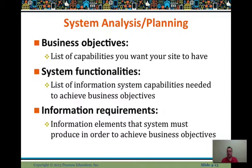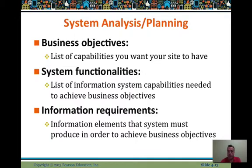Systems analysis and planning covers business objectives, system functions, and information requirements. In addition to listing the capabilities you need to achieve those objectives, you have to know the data elements and specific data that will be used throughout the system. When you break that down to a more granular level, your information requirements will have field-level specifications, length-level, and data type-level specifications.